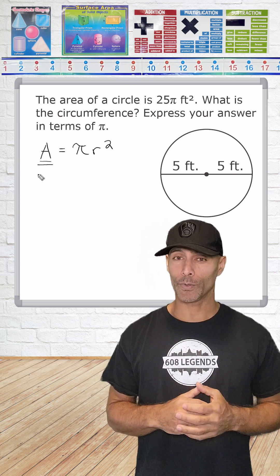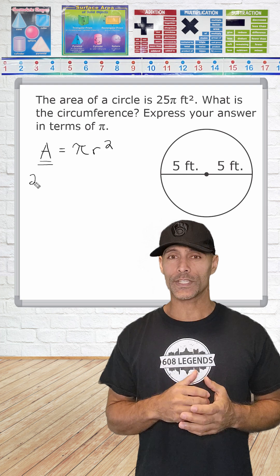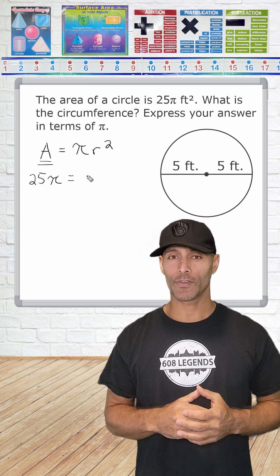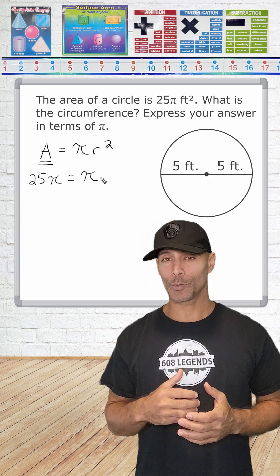The problem gives us the area, which is 25π. So we substitute A in the formula with 25π, and that gives us 25π is equal to πr².